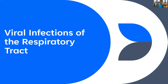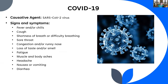Switching gears to viral infections of the respiratory tract. First up is the one that's probably on everybody's mind — because we survived a pandemic. The causative agent is SARS-CoV-2. Signs and symptoms include fever or chills, cough, shortness of breath or difficulty breathing, sore throat, and congestion or runny nose — all things that sound like a cold or the flu, which is what made the pandemic so hard.